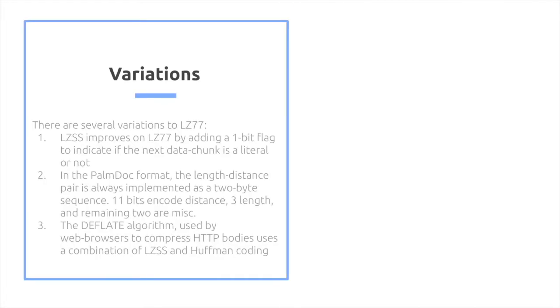So, there's different variations of LZ77. For example, LZSS improves it by adding a 1-bit flag to indicate if the next data chunk is a literal or not. That way we remove all those redundant 00s. Another example is the Deflate algorithm, which is used by web browsers to compress HTTP bodies using a combination of LZSS and the Huffman code.